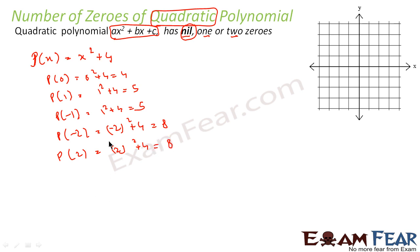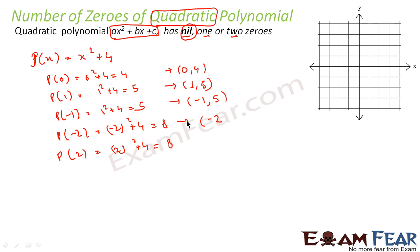So we have these points: x = 0, y = 4; x = 1, y = 5; x = -1, y = 5; x = -2, y = 8; and x = 2, y = 8. In the x-coordinate I am putting the value of k, and in y I am putting the actual value that came out — P(0), P(1), P(2). Let me plot this.